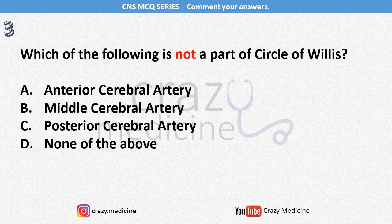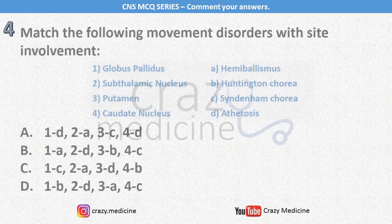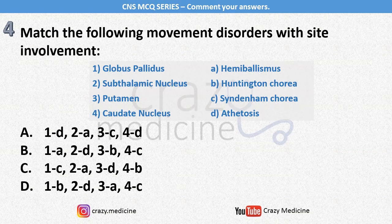Third, which of the following is not a part of the circle of Willis? For this MCQ, imagine the circle of Willis in your mind. Questions from this topic can also be asked as image-based questions. Then fourth, match the following movement disorders with site involvement. This MCQ is based on the new pattern of AIIMS exam. Pause the video, try to think the answer and comment your answer in the comment section.